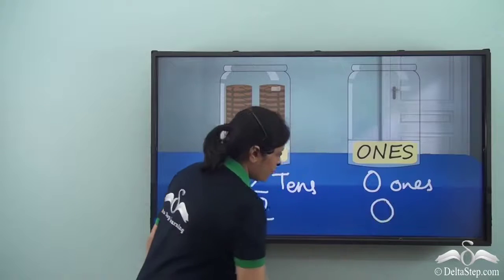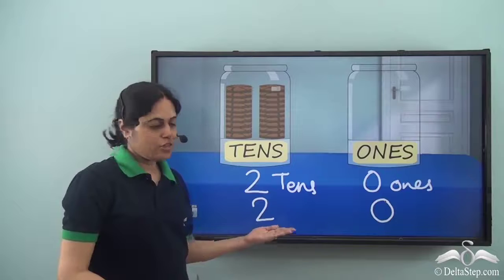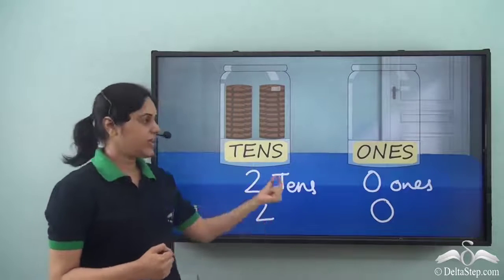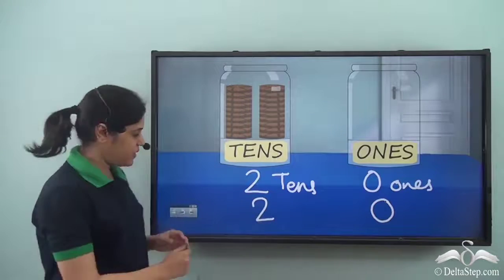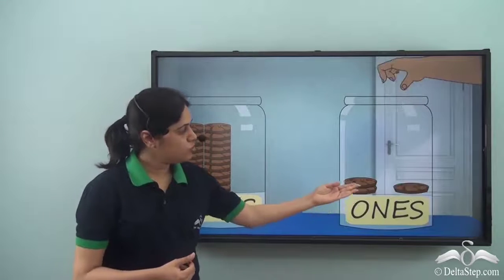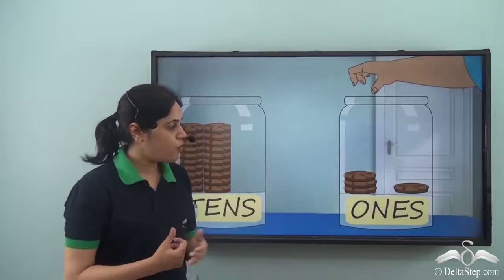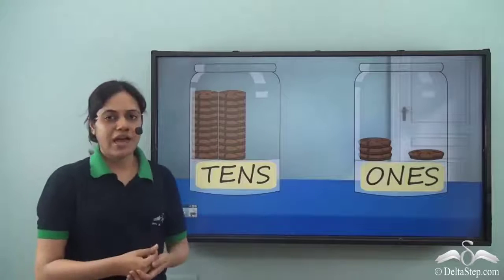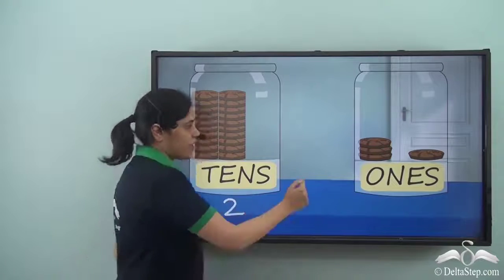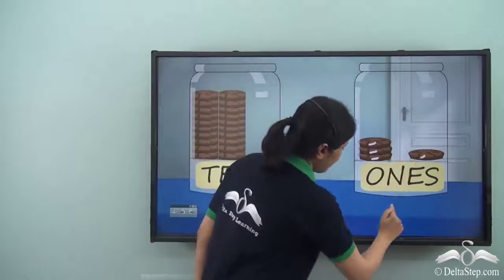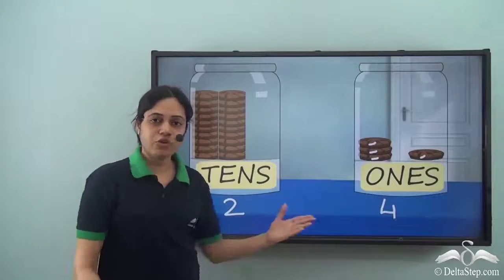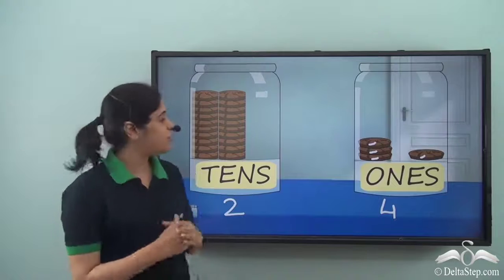Two tens and zero ones is nothing but twenty. So 'two zero' — twenty — is two tens and zero ones, that is two in the tens place and zero in the ones place. Now Abir added one, two, three, four more cookies to the ones jar. So we have two piles of ten cookies and four single cookies, giving us twenty-four cookies in all.